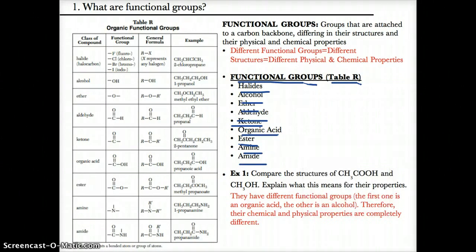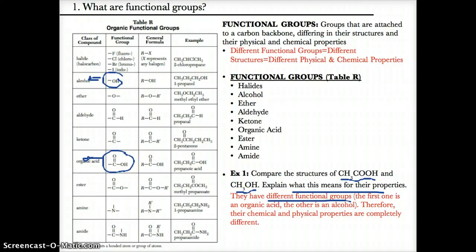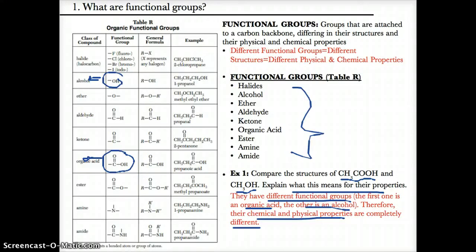In example one, compare the structures of CH₃COOH and CH₃OH and explain what this means for their properties. CH₃COOH matches up to COOH, which is an organic acid, whereas CH₃OH, because of the OH at the end, matches up to an alcohol. They have different functional groups — CH₃COOH is an organic acid while CH₃OH is an alcohol. As a result of their different functional groups and different structures, their chemical and physical properties will be completely different.